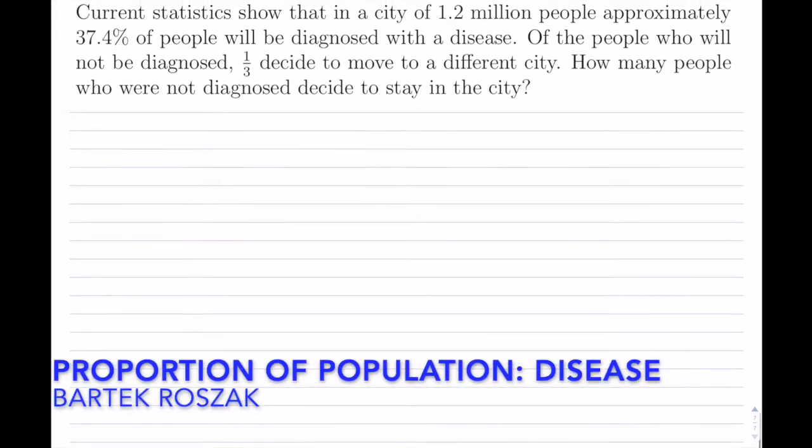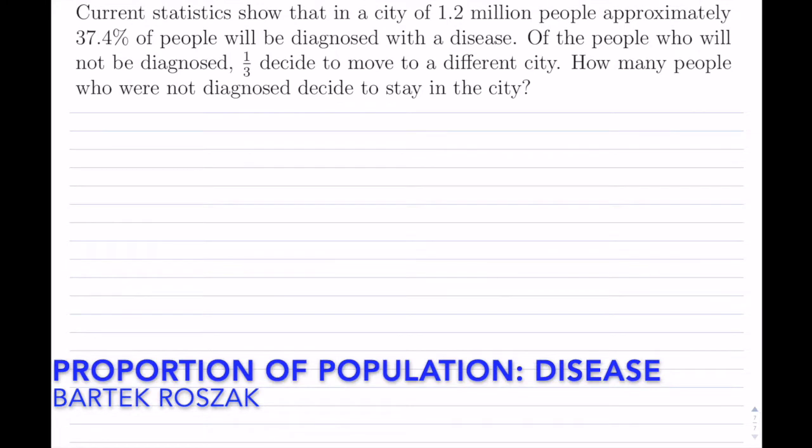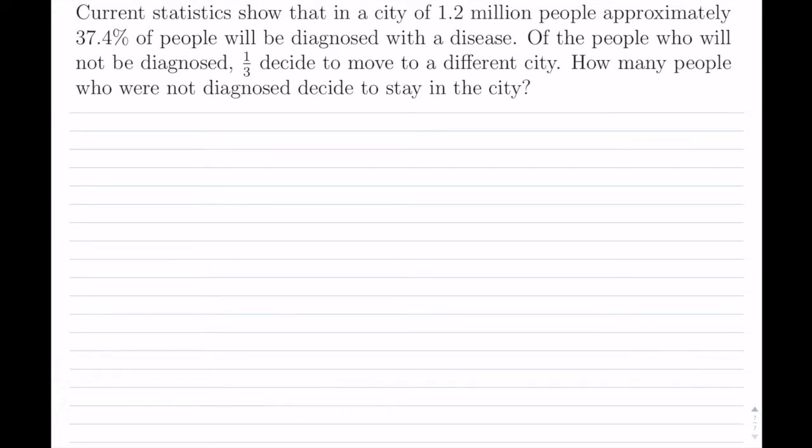Current statistics show that in a city of 1.2 million people, approximately 37.4% of the people will be diagnosed with a disease. Of the people who will not be diagnosed, a third decide to move to a different city. How many people who were not diagnosed decide to stay in the city?